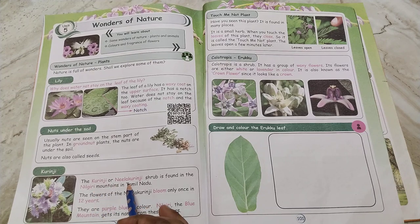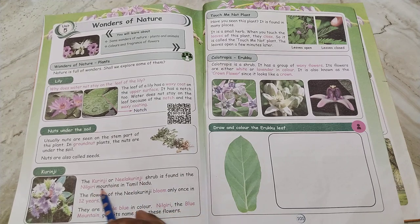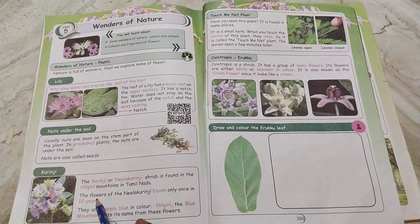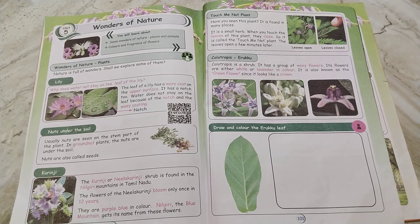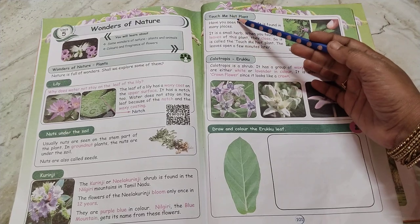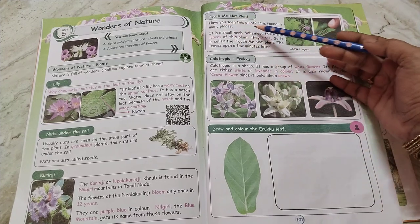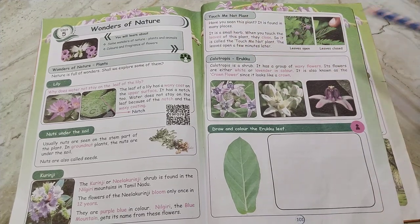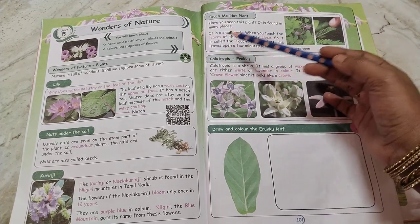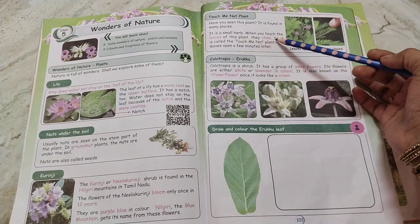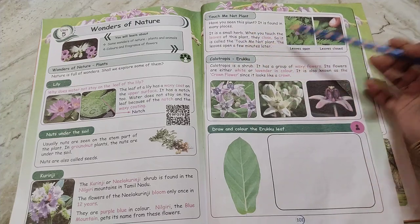Kurunji — the Neelakurunji shrub is found in the Nilgiri mountains in Tamil Nadu. The flowers of Neelakurunji bloom only once in 12 years. They are purple-blue in colour. The Nilgiris (Blue Mountains) gets its name from these flowers. Touch-me-not plant — it is a small herb. When you touch the leaves of this plant, they close. So it is called the touch-me-not plant. The leaves open a few minutes later.